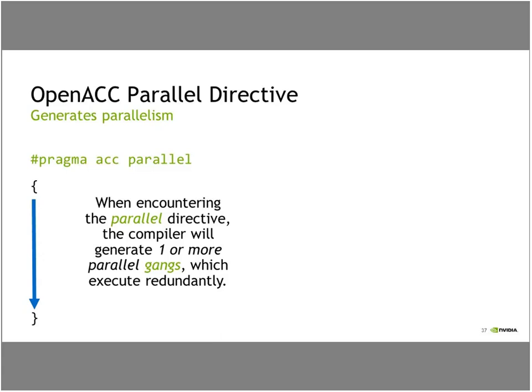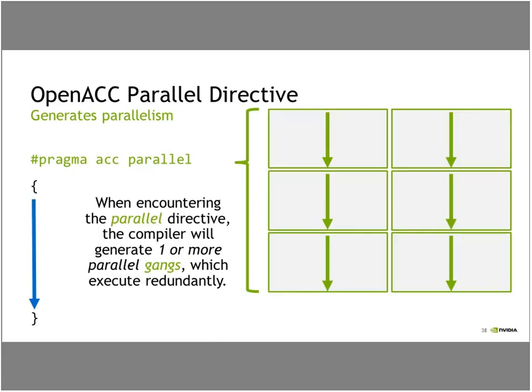Let's start putting our computation on the device using the OpenACC parallel directive. The parallel directive, as the name implies, simply generates parallelism. Here I have a pragma ACC parallel with curly braces to denote where the parallel region begins and ends. When I encounter a parallel directive, the compiler generates what we call parallel gangs. I've generated six gangs to run on, but the blue thread that was running once on the host is now running six times on the GPU — I have resources to run in parallel, but haven't actually distributed my work yet.